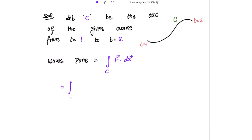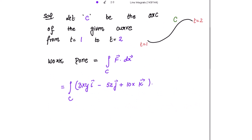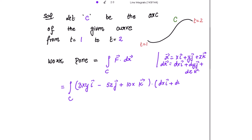What is F vector given to us? It is 3xy i − 5z j + 10x k. And its dot product with dr vector — the position vector r = x i + y j + z k, so dr = dx i + dy j + dz k.